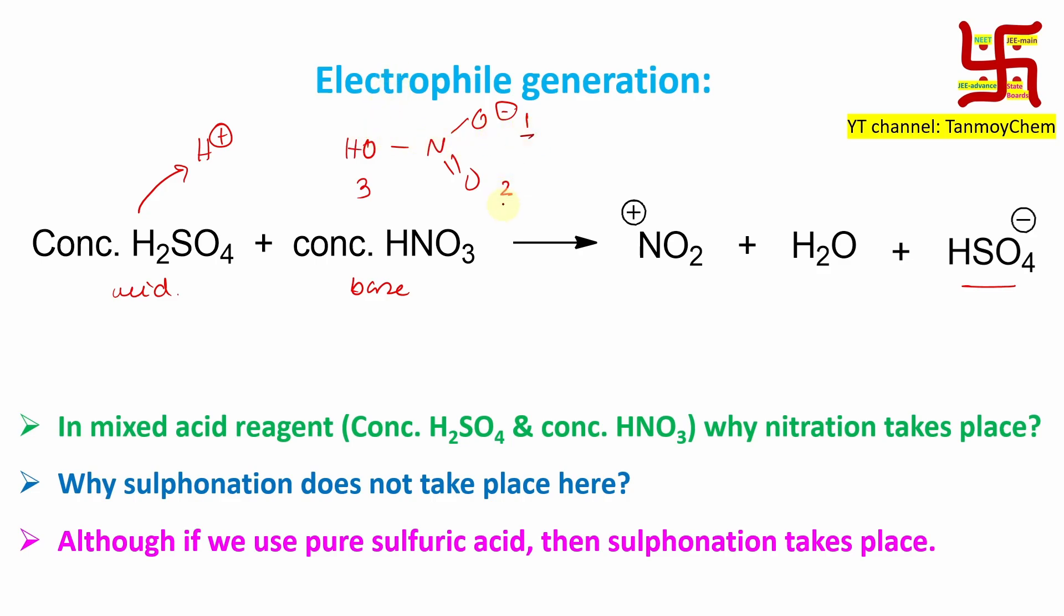Here one and two, protonation is also possible, but that will not have a fate. But if protonation takes place at position three, it will result in electrophile generation. How? The negative charge can push and it will go. By the way, this will create a positive charge on nitrogen.